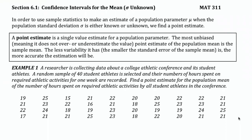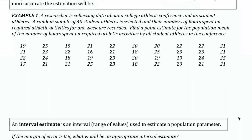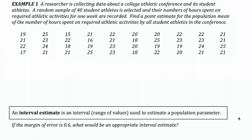We're going to start by taking a look at what a point estimate is. We have a researcher who is collecting data about a college athletic conference and its student athletes. This is a random sample of 40 student athletes and the number of hours they spent on required athletic activities for one week. We're going to find a point estimate for the population mean of the number of hours spent on required athletic activities. From the reading above, we said that the best estimate for the population mean is the sample mean.